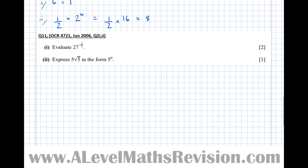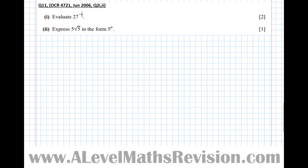Let's evaluate 27 to the power of minus two-thirds. First, spend the minus sign on finding the reciprocal of 27, which is 1/27, to the power of two-thirds. Then look at the bottom of the fraction — find the third root: the cube root of 1 is 1, and the cube root of 27 is 3, giving one-third. We still need to square it: square the top gives 1, square the bottom gives 9, so the answer is one-ninth.